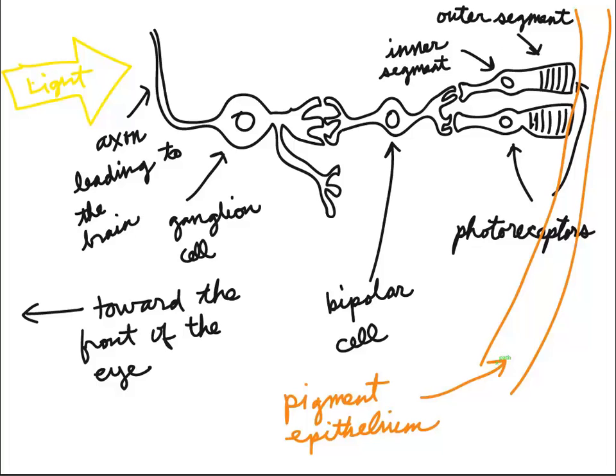Now it might be a curious thing for us and we may wonder why is it that the light has to pass from the left side going past the ganglion cell and the bipolar cell until it reaches the photoreceptor? We really don't completely know the answer to this question.